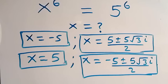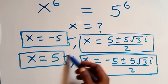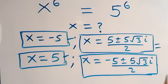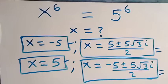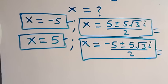Altogether we have 6 solutions: 2 real solutions (x = −5 and x = 5), 2 complex solutions from Case 1, and 2 complex solutions from Case 2. Thank you for watching at Master Team as Class — don't forget to subscribe for more videos, turn on the notification bell, share, give a thumbs up, and leave a comment. See you next class!